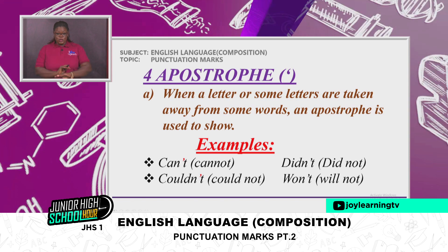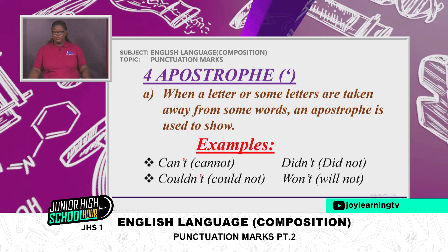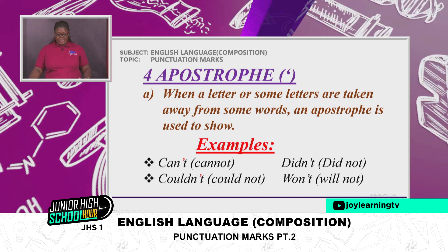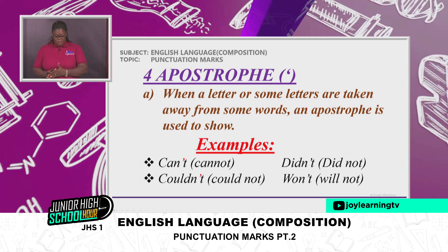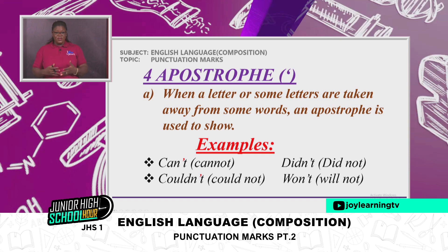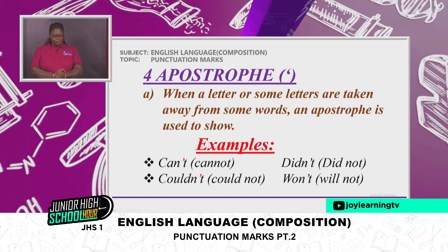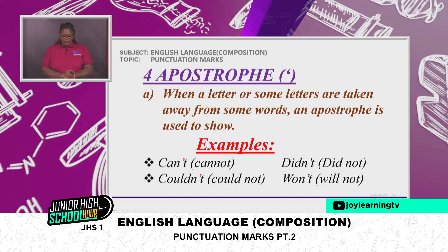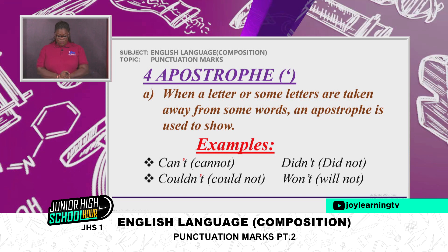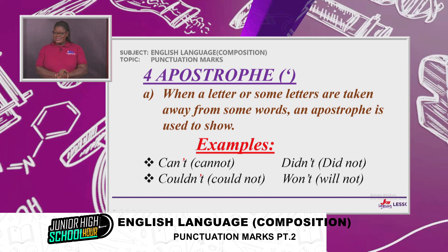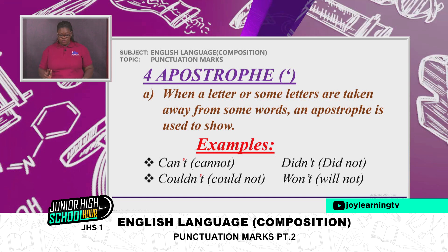Then we moved on to the apostrophe. When a letter or some letters are taken away from some words, an apostrophe is used to show that omission. Examples: 'can't' — the full form is 'cannot'; 'couldn't' — 'could not'; 'didn't' — 'did not'; 'won't' — 'will not.'